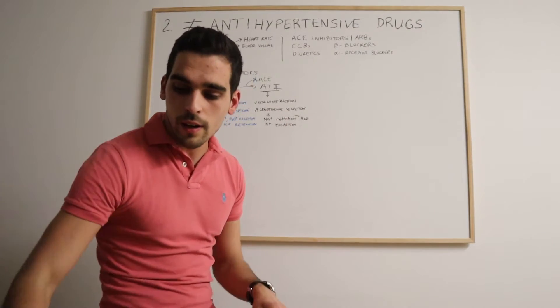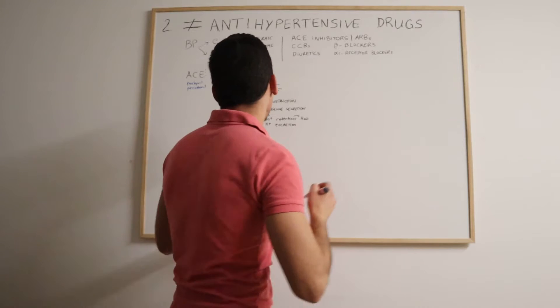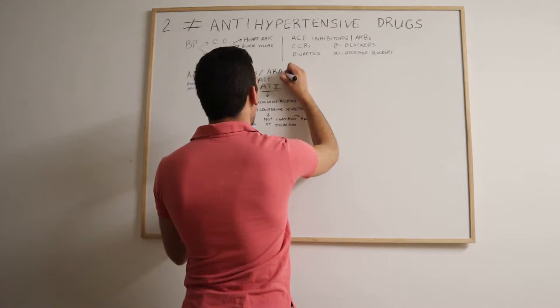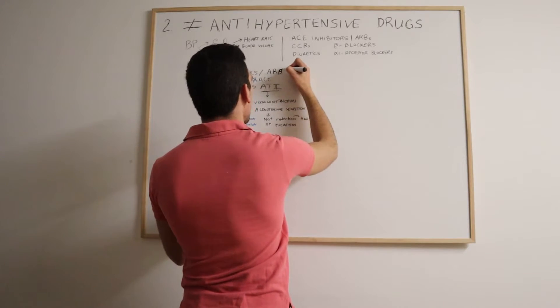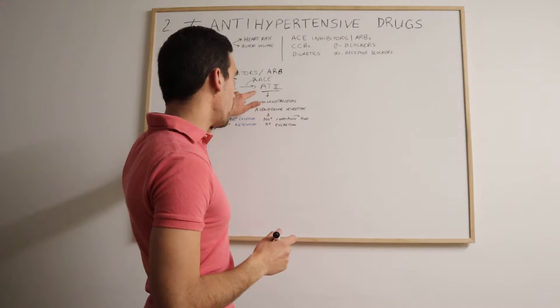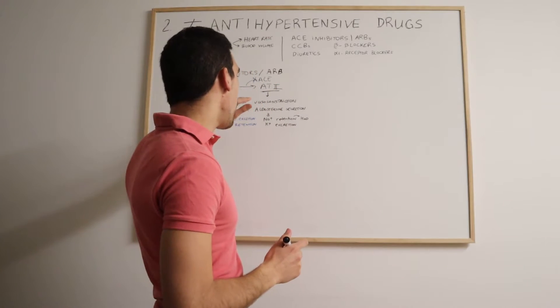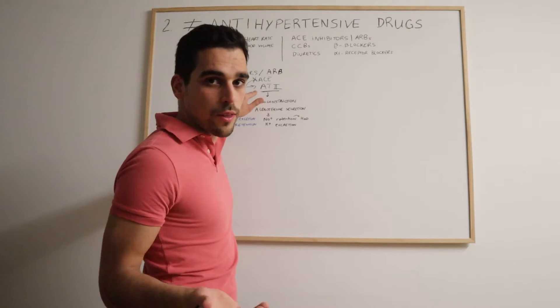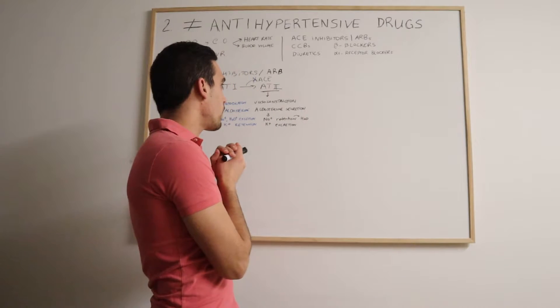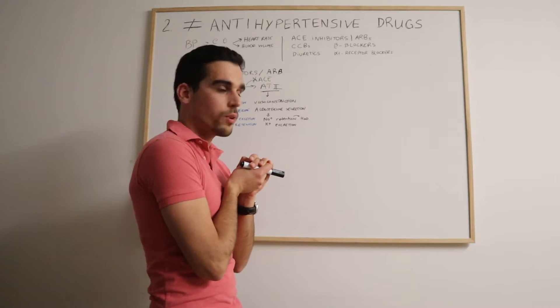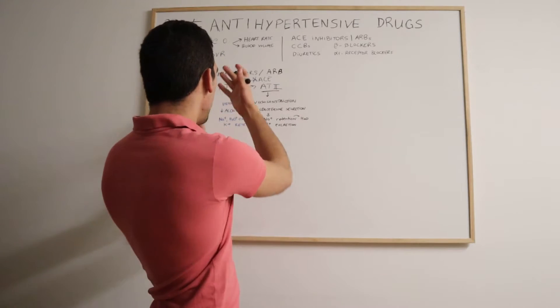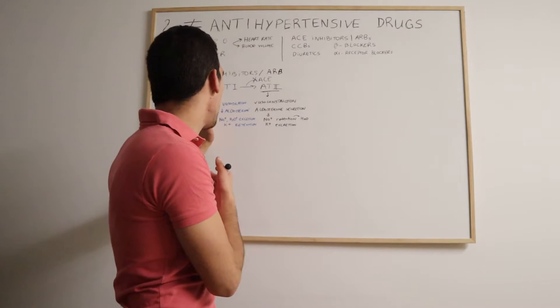Then we'll have a second class of drugs which is similar to the ACE inhibitors, which are the angiotensin receptor antagonists or blockers, the ARBs. And the ARBs are basically responsible to block the action of the angiotensin 2. They will compete and inhibit the angiotensin 2 effects.